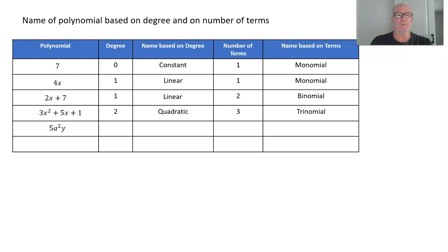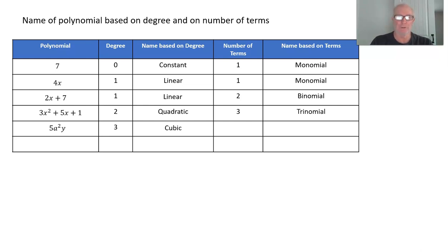5a²y — what's the degree? Well, 2 plus 1 is 3. A polynomial with a degree of 3 is called a cubic polynomial. Now there's only one term there, so again, that's a monomial.